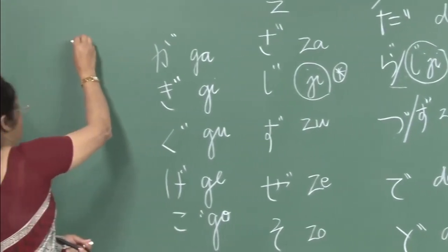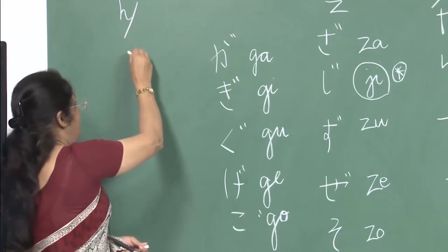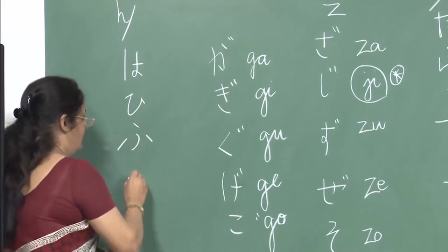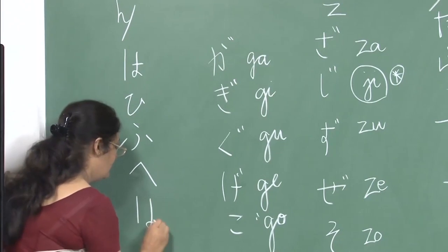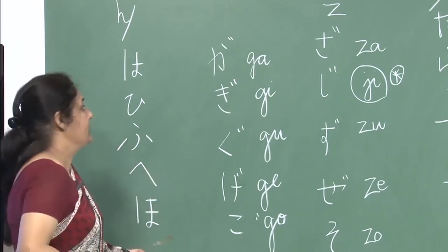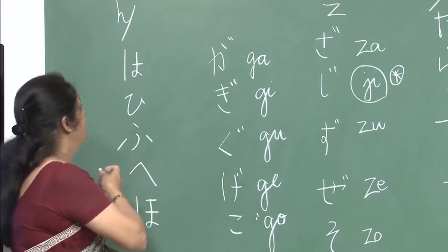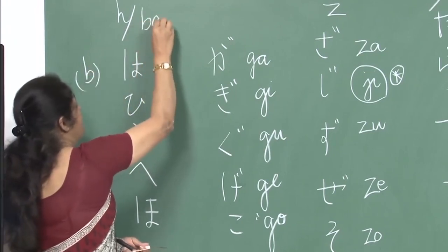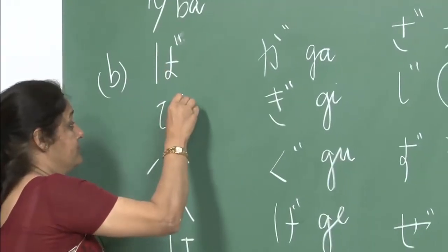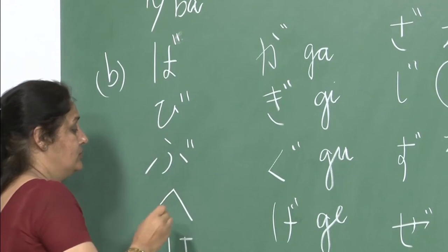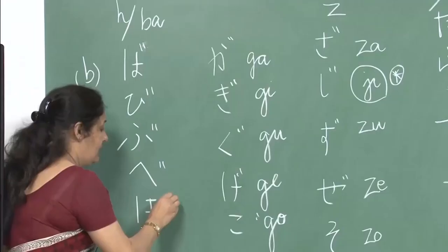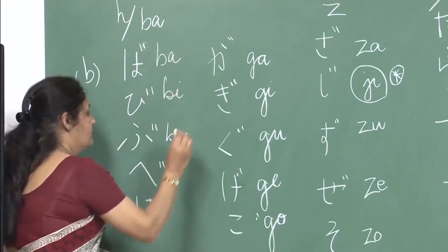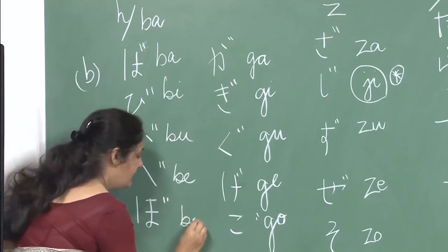You remember doing the h sound: ha, hi, fu, he and ho. Now it is a little different from here. Ha changes to the b sound: ba, bi, bu, be and bo. Repeat after me: ba, bi, bu, be and bo.